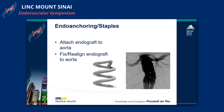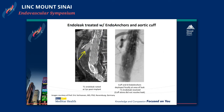More recently, we've been using endo anchoring and staples. This helps attach the endograft to the aorta and fix or reline that endograft to the aortic wall, recreating and reestablishing more apposition and more seal, allowing for a resolution of a type 1a endoleak. Here's a patient who developed a type 1a endoleak at one year. An aortic cuff was placed and that did not resolve the endoleak. Ultimately, by placing six endo anchors and re-opposing that endograft to the seal zone, the endoleak was resolved.